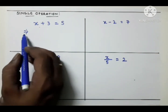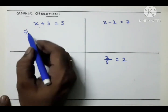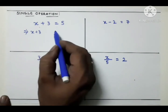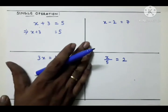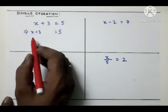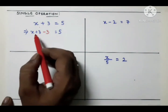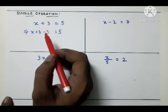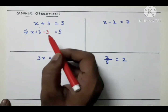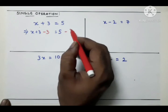Every equation step should be preceded by the 'implies' symbol. We write the equation x + 3 = 5. To remove the 3, we identify the operation: 3 is added, so its inverse is subtraction. We subtract 3 from the left hand side. To keep the balance, we also subtract 3 from the right hand side.